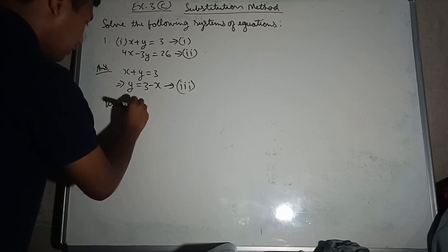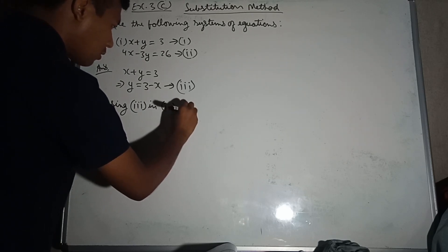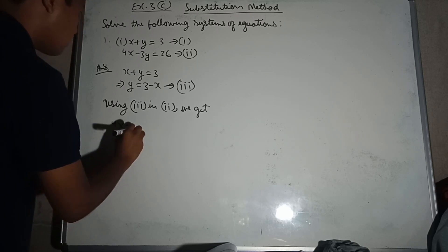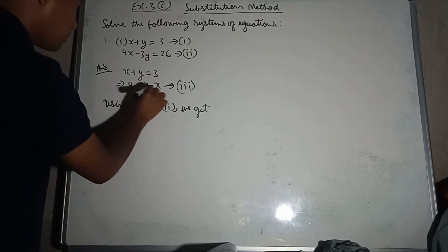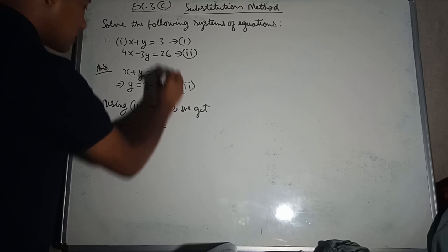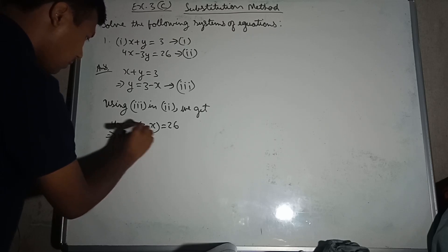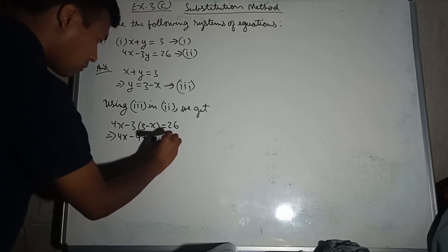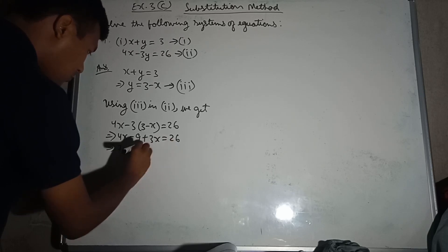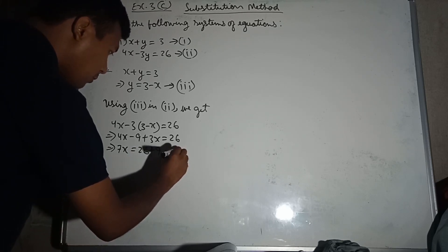Using equation 3 in equation 2, we get 4x minus 3 times (3 minus x) equal to 26. This implies 4x minus 9 plus 3x equal to 26. So 4x plus 3x is equal to 7x.